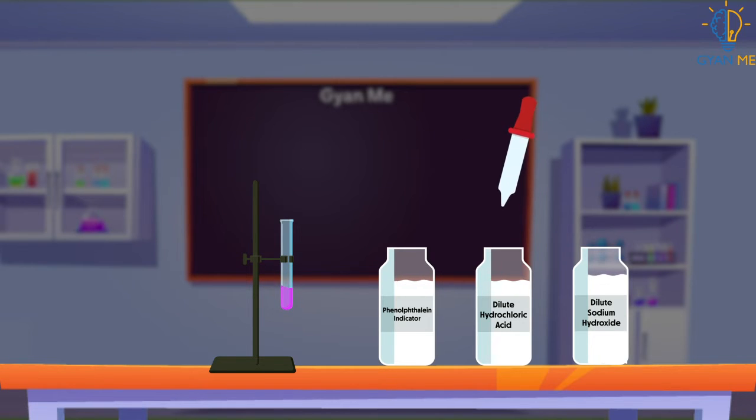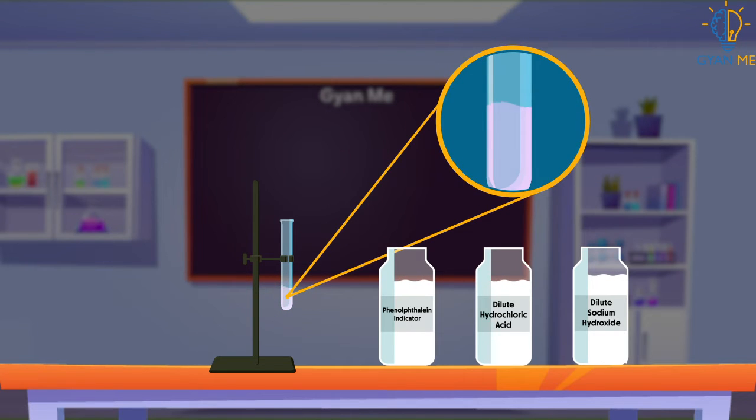Now let us add dilute hydrochloric acid solution to the test tube drop by drop. What do we observe now? Right, we observe that the pink color of solution disappears and the solution becomes colorless at a certain point.